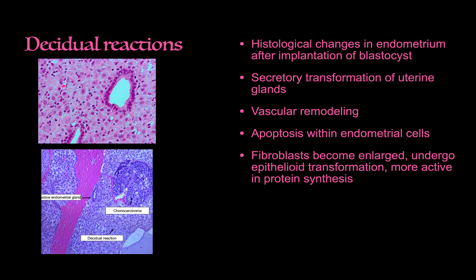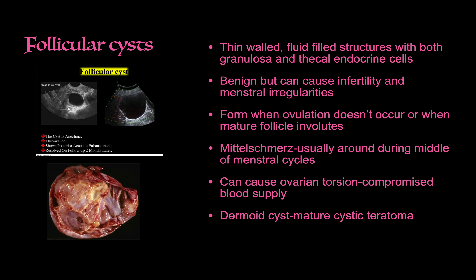The decidual reaction represents the mother's side of placenta formation. It involves transformation of the uterine glands, vascular remodeling, apoptosis, enlargement of fibroblasts, and increased protein synthesis — all allowing the mother's body to accommodate the additional resource demands of the growing fetus.